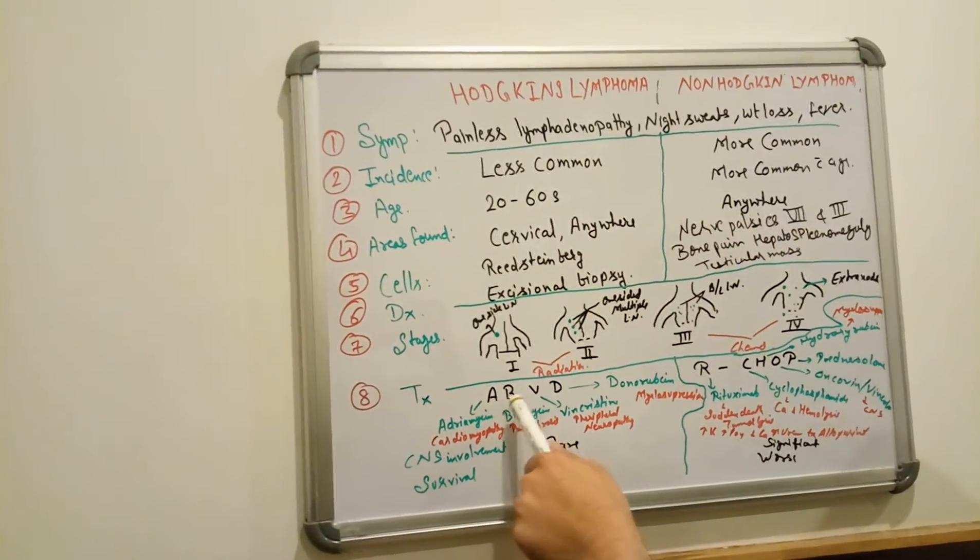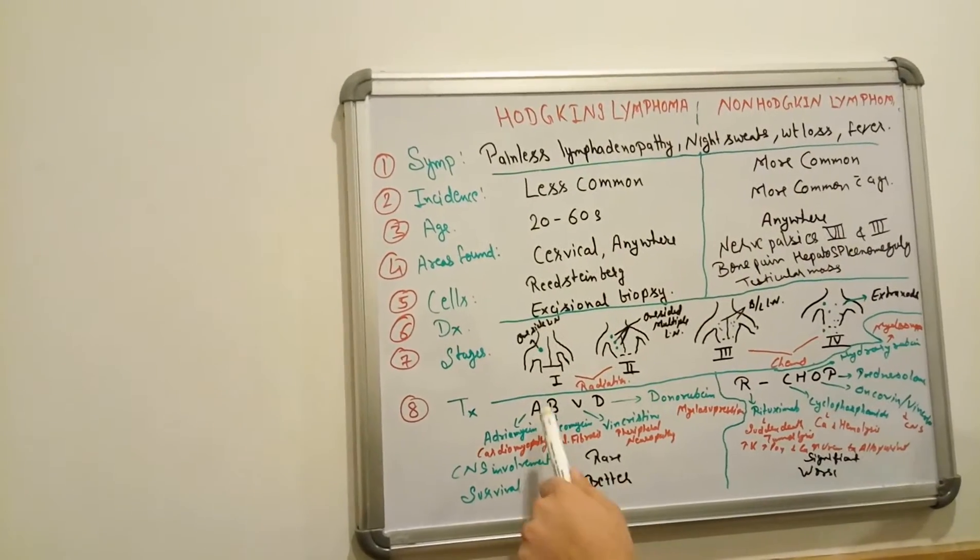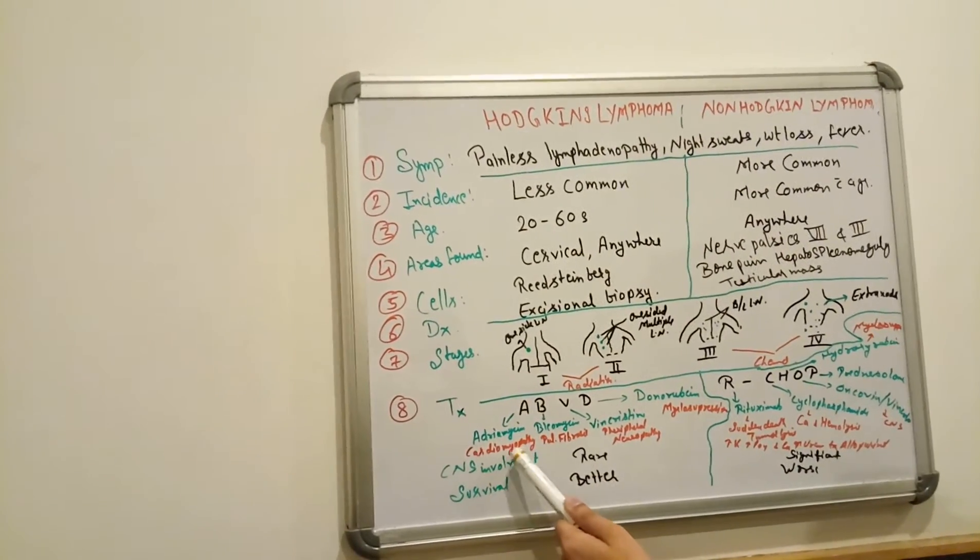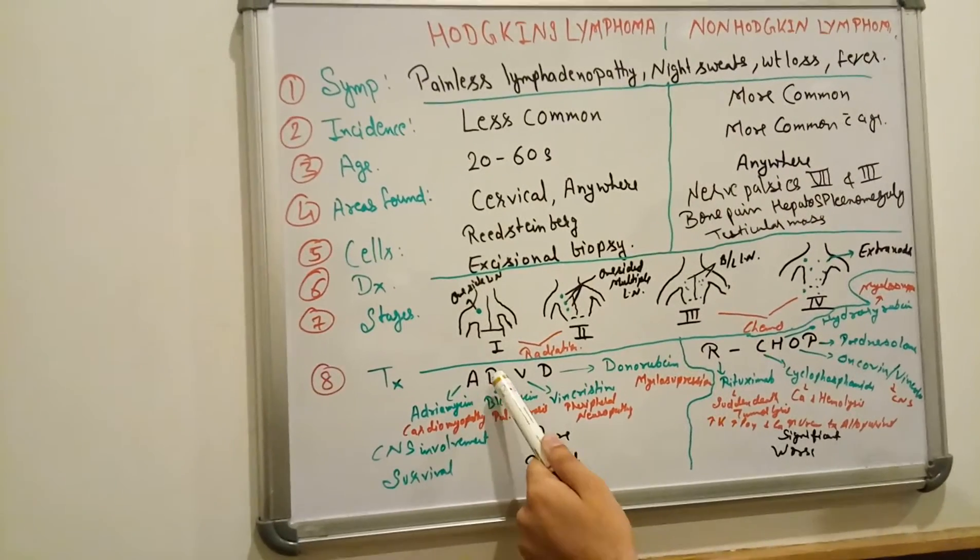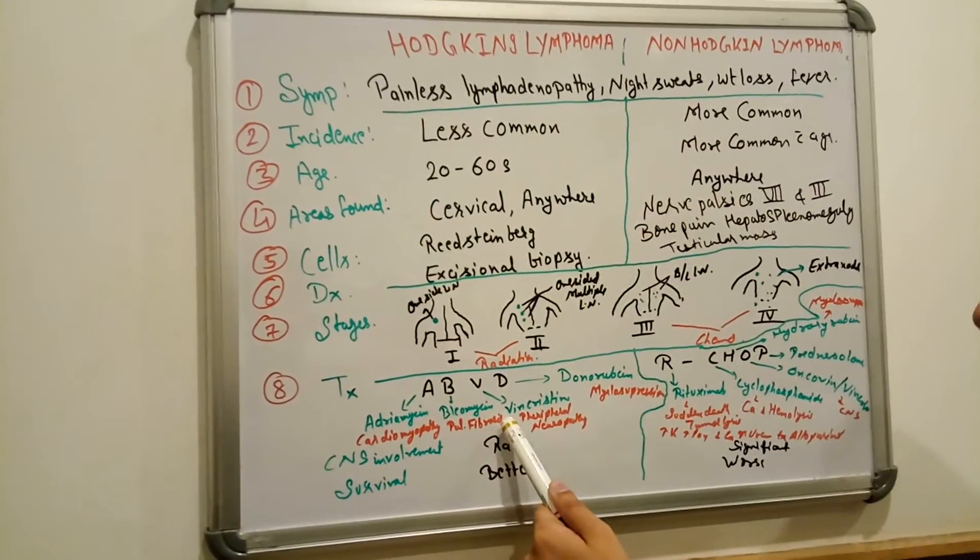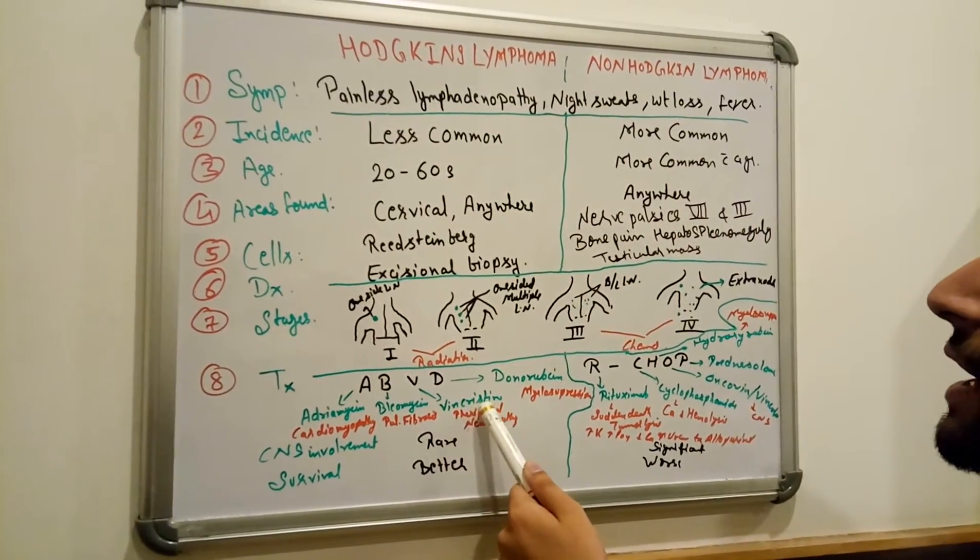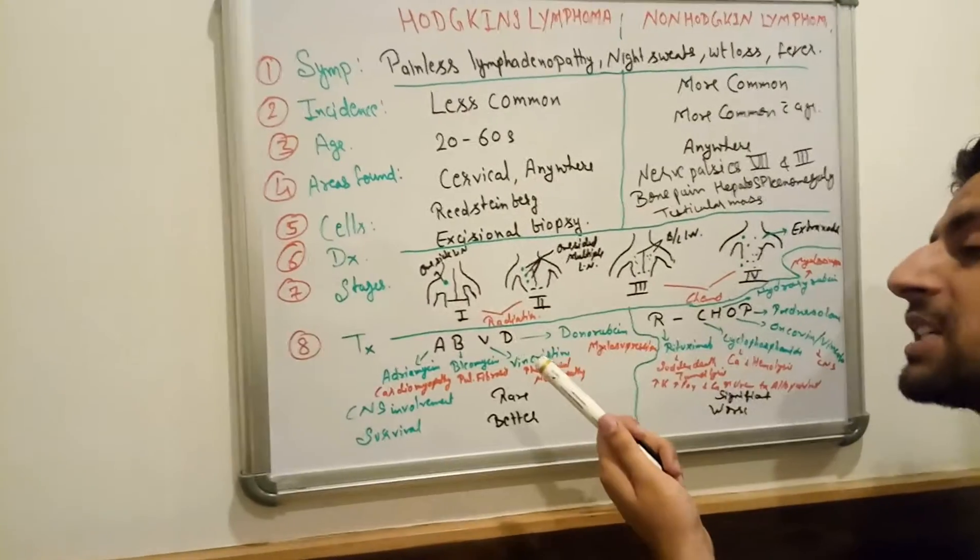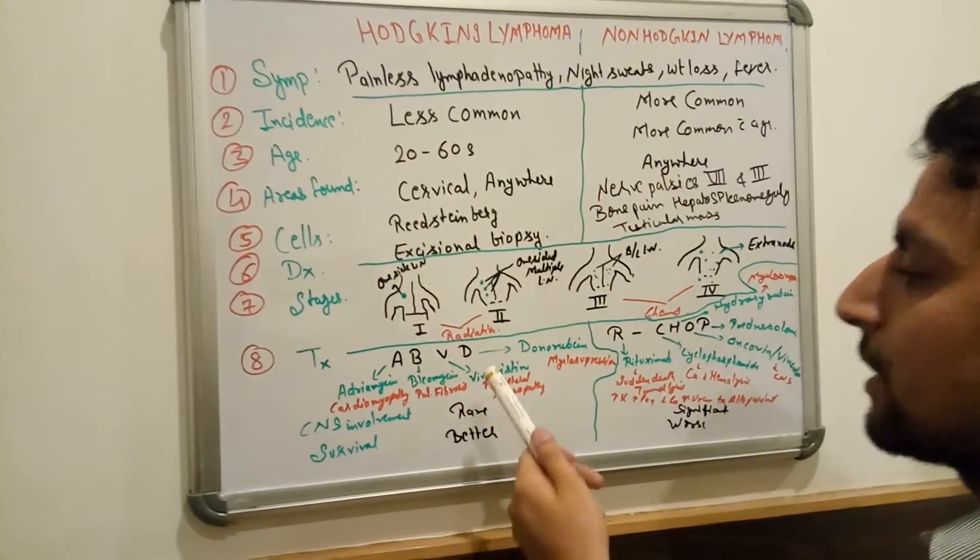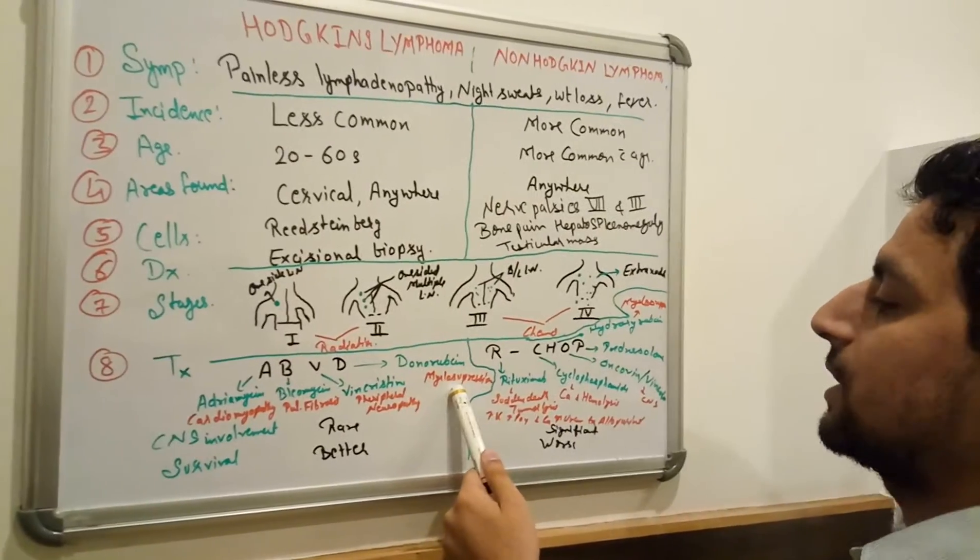Hodgkin lymphoma we are going to treat with ABVD regimen. ABVD you have to learn. A for Adriamycin, B for Bleomycin which complication is pulmonary fibrosis. V for Vincristine for CNS and peripheral neuropathy. Blast in means bone marrow suppression. And D is Dacarbazine responsible for myelosuppression.